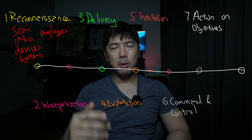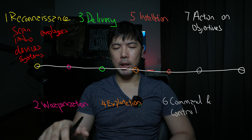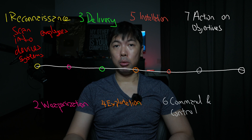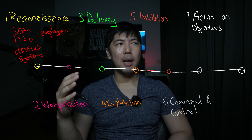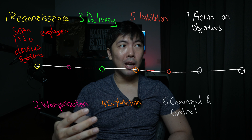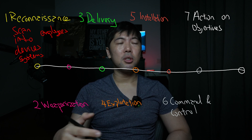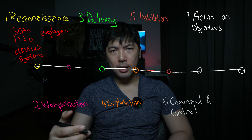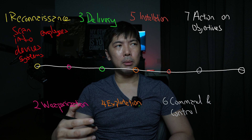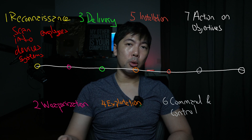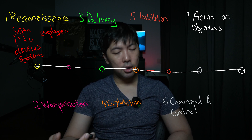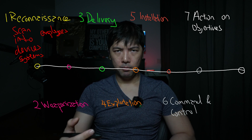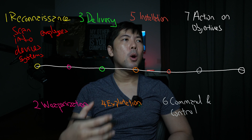Think of it like you're a burglar about to rob a house. You'd first try to understand the street — say 10 houses with different security controls. Some have high fences, some have CCTV cameras, some have 4K high-definition cameras with motion detection and person recognition, while others are basic black-and-white. As a hacker, this first part is scouting and gathering data.